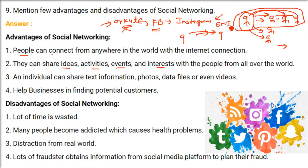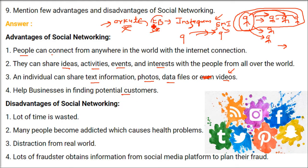You can also know what is going on in their life all over the world. Social media influencers tell you what to do and what not to do. Individuals can share text, photos, data files, and videos. You can also do business activity — you can influence people, advertise your product, or buy products. Influencers also advertise in this way.